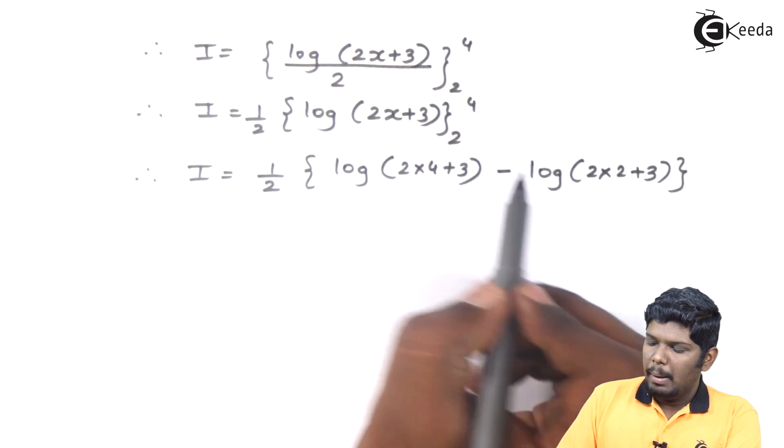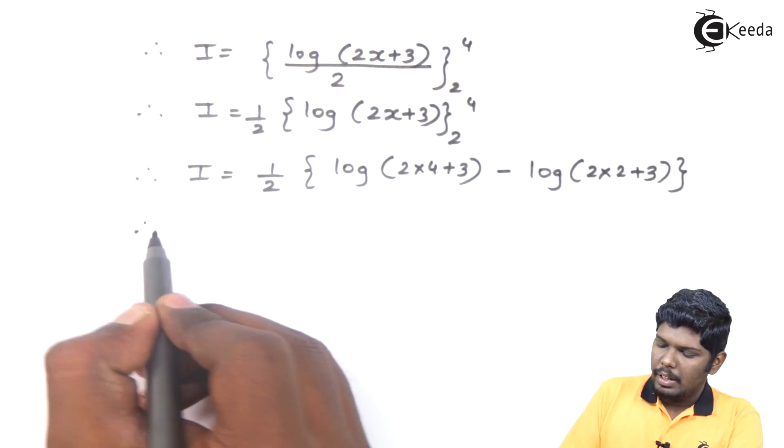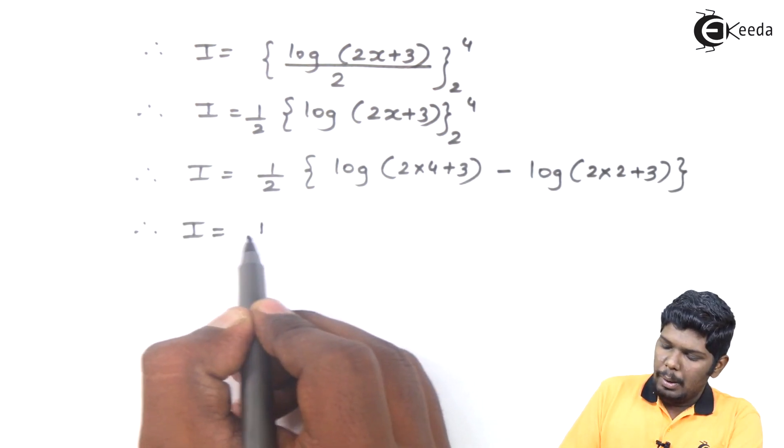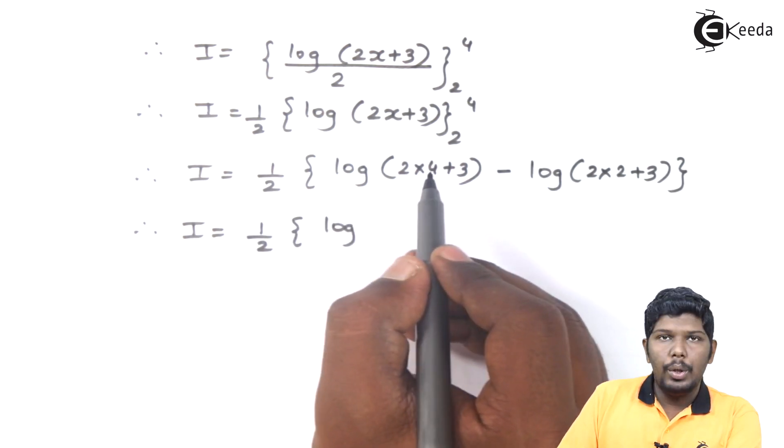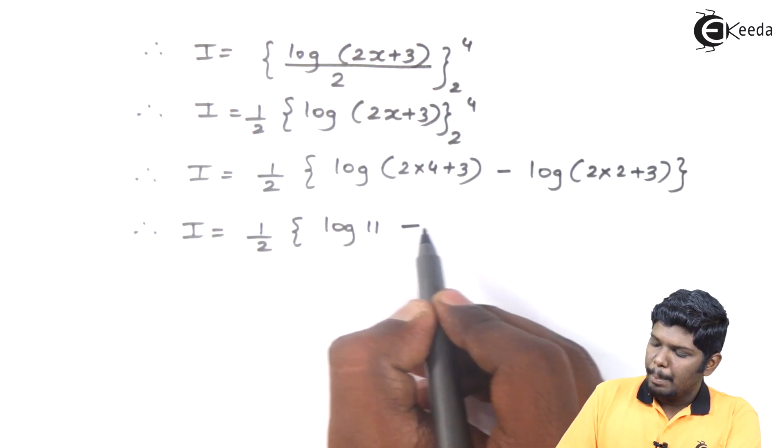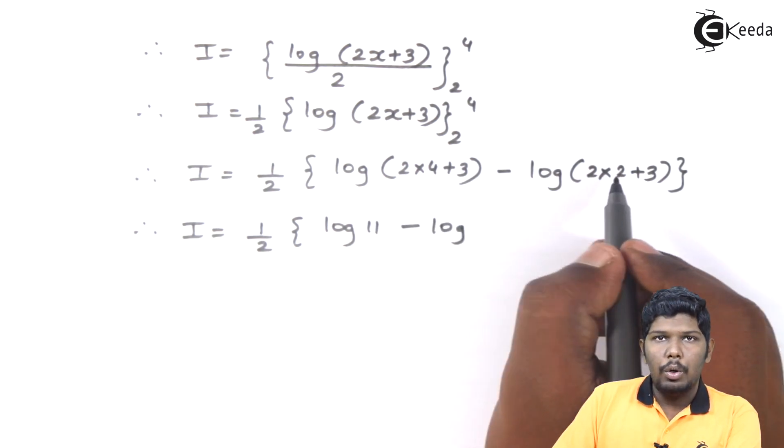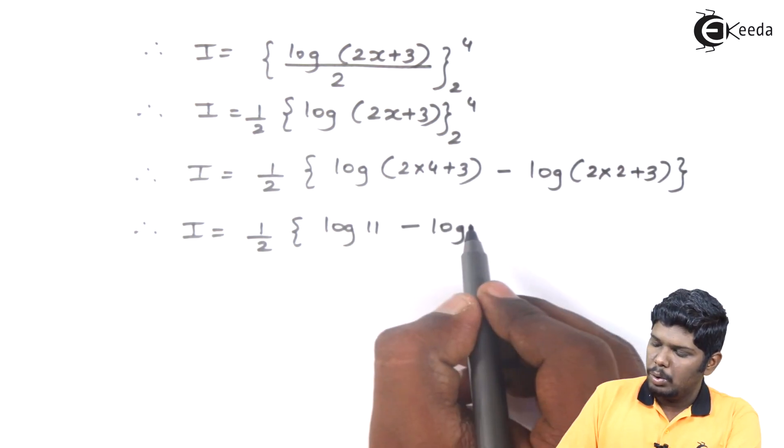Thus, we have done upper limit minus lower limit. Therefore, I is equal to 1 by 2, log of 2 into 4 is 8, 8 plus 3 will give you 11, minus 2 into 2 is 4 and 4 plus 3 will give you 7.